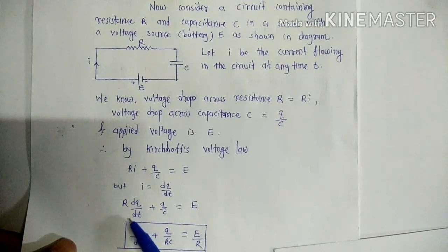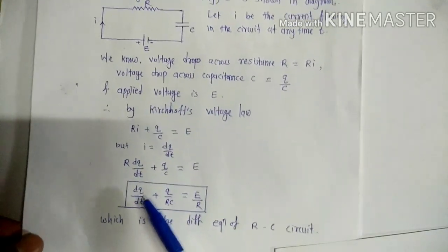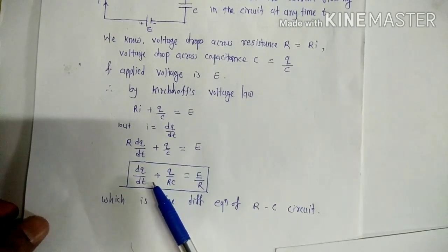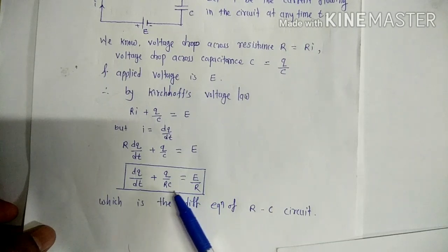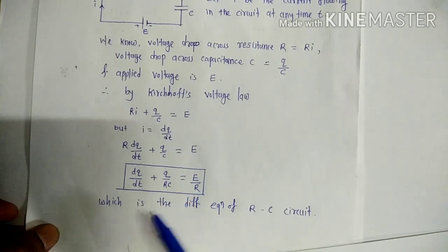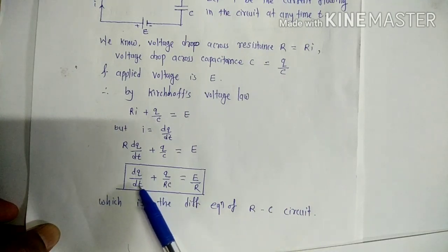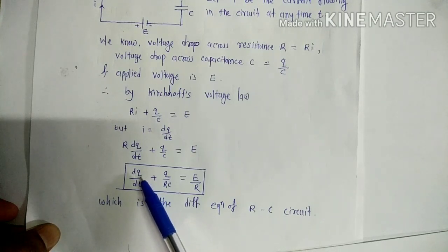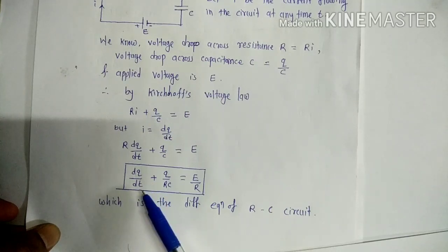To write this differential equation in standard form, we divide both sides by R. This gives dQ/dt + Q/(RC) = E/R, which is the differential equation of the electrical circuit consisting of resistance R and condenser of capacity C. Solving this first-order, first-degree differential equation gives the relation between charge Q and time T.